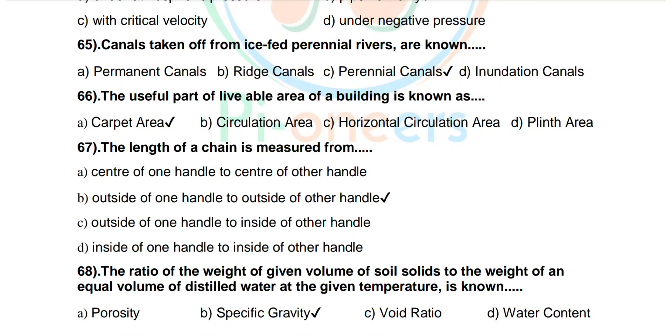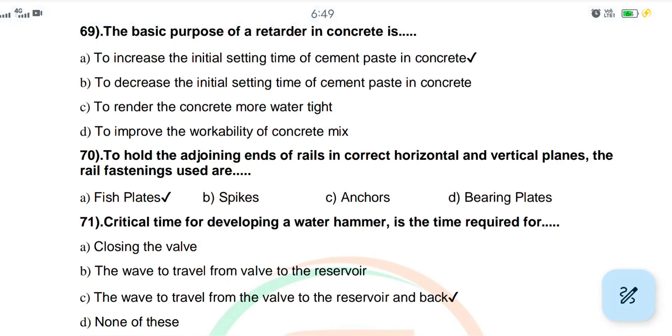Question number 69: The basic purpose of a retarder in concrete is to increase the initial setting time of cement paste in concrete, to decrease the initial setting time, to render the concrete more water tight, or to improve the workability of concrete mix. Correct answer: to increase the initial setting time of cement paste in concrete.